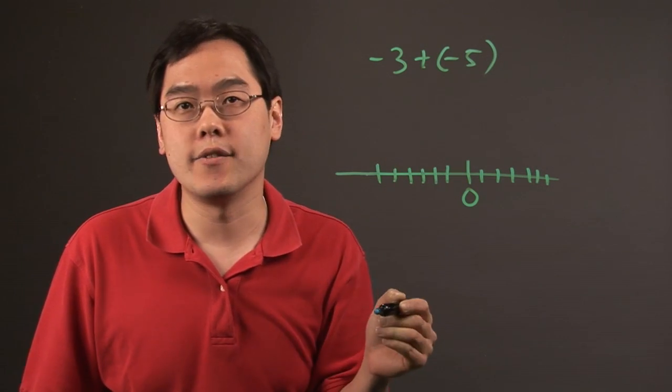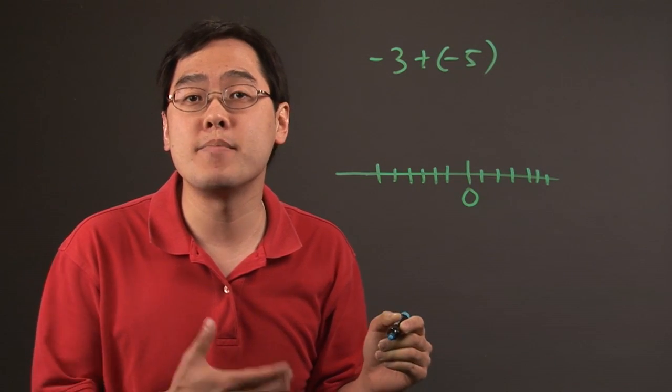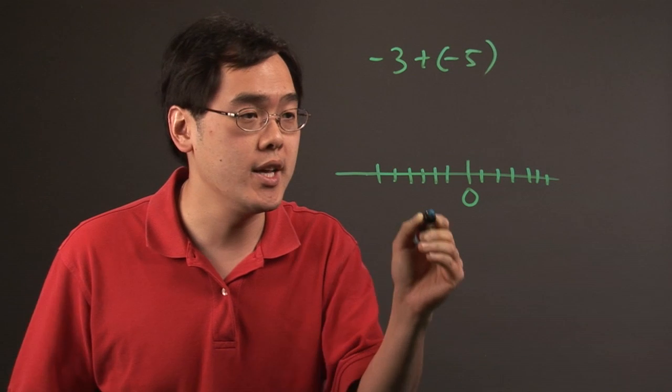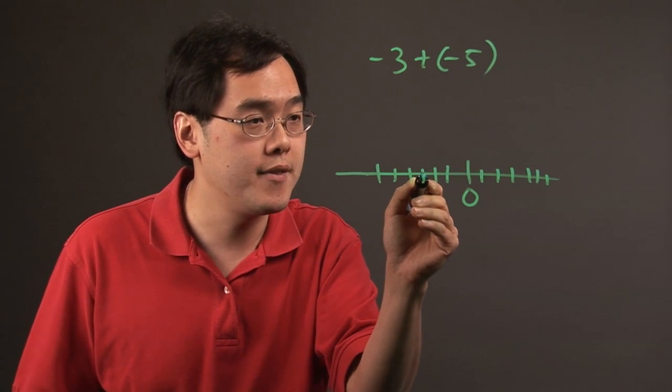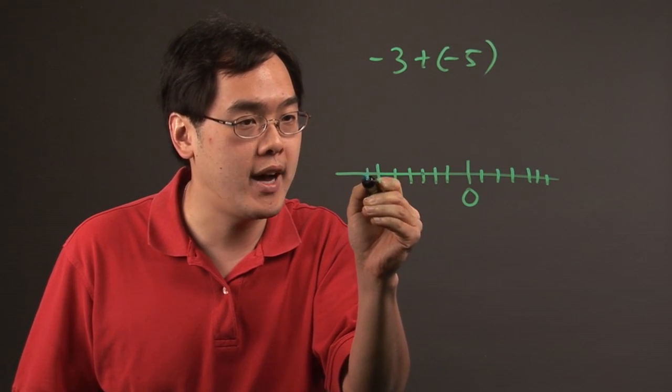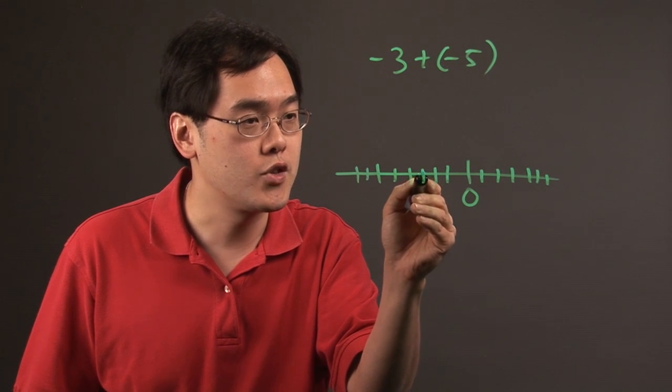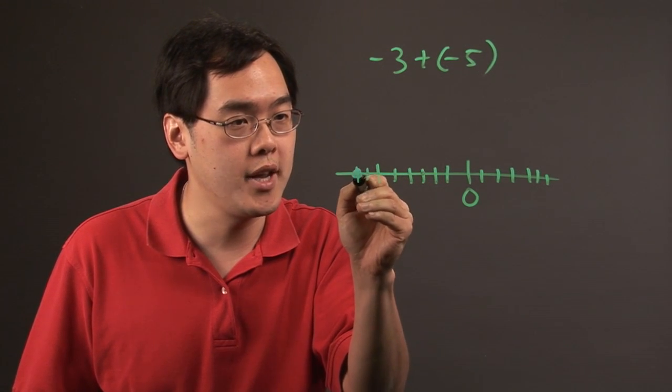Now, because you're adding a negative 5, what that tells you is you want to make the number even more negative than what it already is. So if you're starting here and you're adding negative 5, that means you're going to the left five more places. So if you're starting here, 1, 2, 3, 4, and 5. So you're going to end up here.